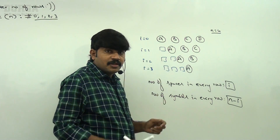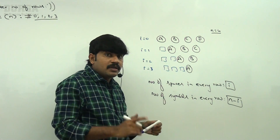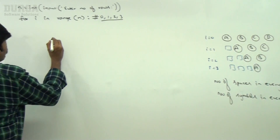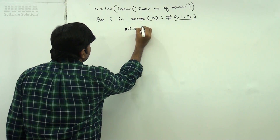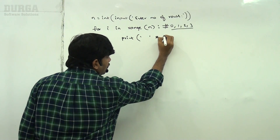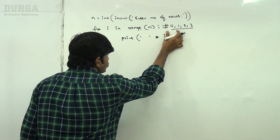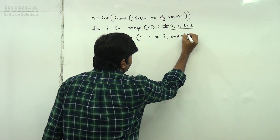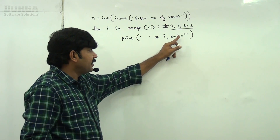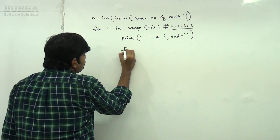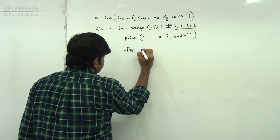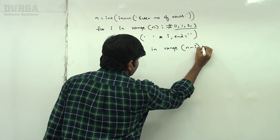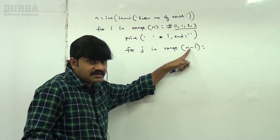The symbols keep changing within each row, so a nested loop is required. First, print i number of spaces using end equal to empty string to stay on the same line. Then for j in range of n minus i, print the n minus i number of symbols. We need to identify which symbol to print.